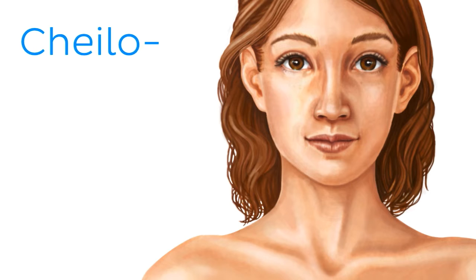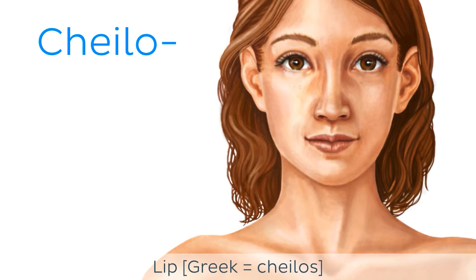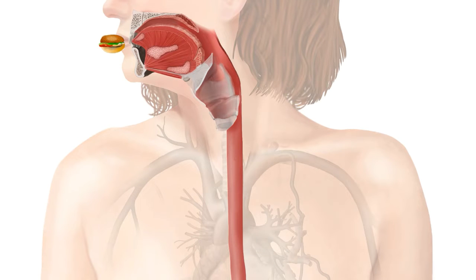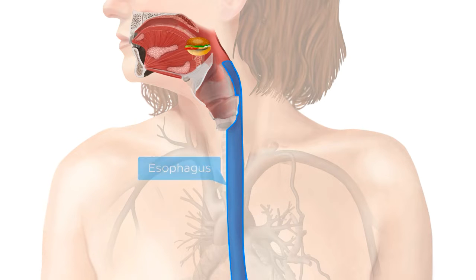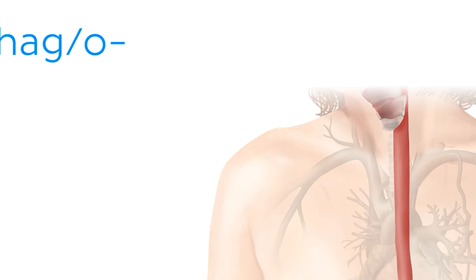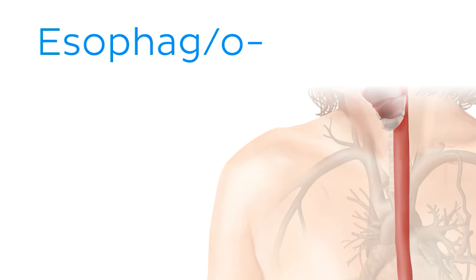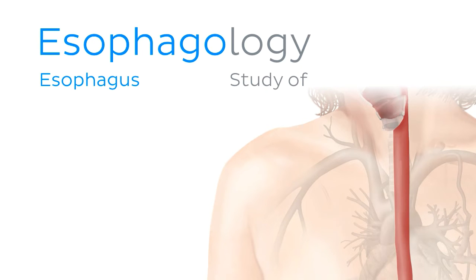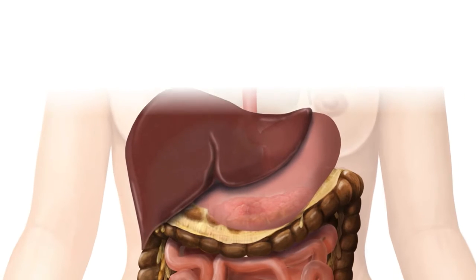We also have the lesser known 'chilo', which comes from Greek. For instance, a chilocarcinoma is a malignant tumor of the lip. After being chewed or masticated, food leaves our oral cavity via the pharynx, before arriving into the esophagus, for which related conditions contain the root word 'esophag' or 'esophago' with the O at the end. To give you an example, esophagology is the study of the structure and diseases of the esophagus.